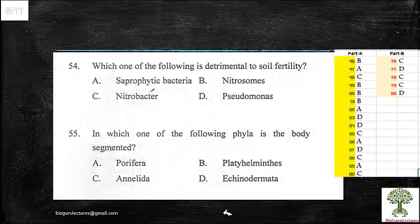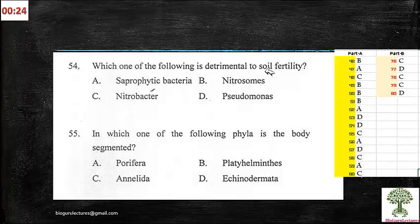54th one: which one of the following is detrimental to soil fertility? You can say that Pseudomonas. When you see Pseudomonas, why it should be detrimental? If there is no Pseudomonas, then you can say that the soil is quite healthy because it is anaerobic. Whereas all other ones are positive traces. When you say Nitrosomonas or Nitrobacter, this helps the soil to give you more fertility. Hence, 54th, Pseudomonas is the right answer.